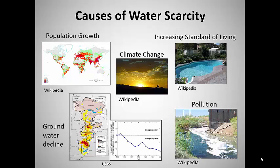Another human activity that makes water scarcer is over-pumping of groundwater, often called groundwater mining, in which water is removed from aquifers more quickly than it is replenished through natural recharge processes. In the US alone, between 1900 and 2008, we have lost enough underground water to fill Lake Erie twice, according to the US Geological Survey. That volume jumped by 25% just after the year 2000.